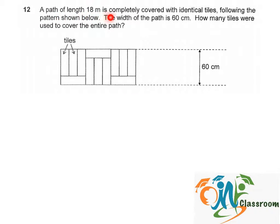A path of length 18 meters is completely covered with identical tiles following the pattern shown below. The width of the path is 60 cm. How many tiles were used to cover the entire path?